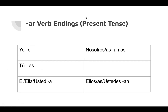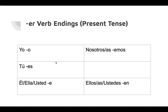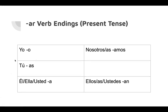So the AR verb endings — these are obviously in the present tense because that's all that we did. In the yo form, we add an O to the stem. In the tú form, we add AS to the stem. Remember, these pronouns are always the same. Él, ella, and usted, you add an A to the end. Nosotros or nosotras, you add AMOS to the end. Ellos, ellas, and ustedes, you add AN to the end. So we went over that before.